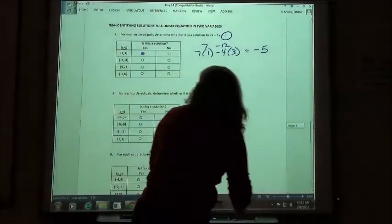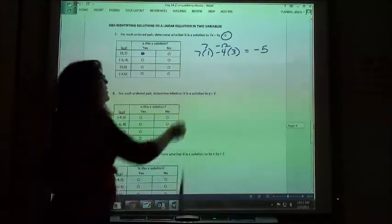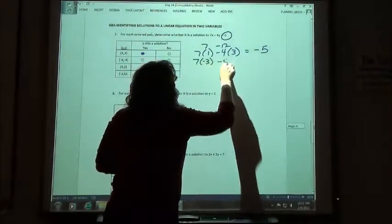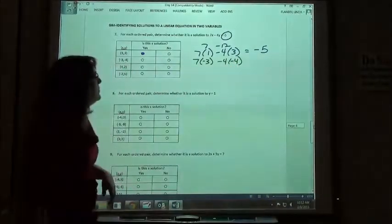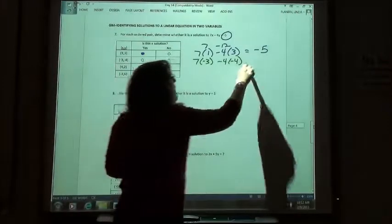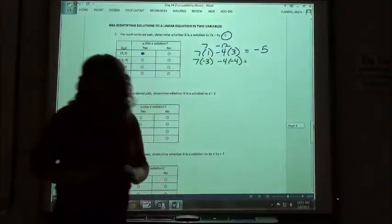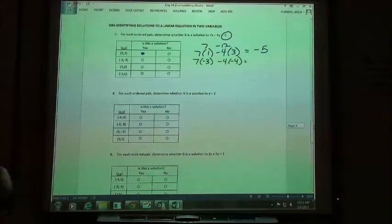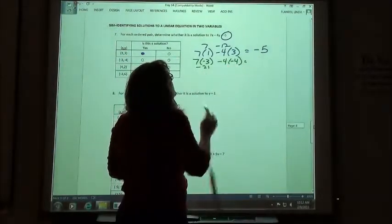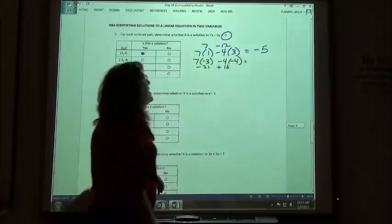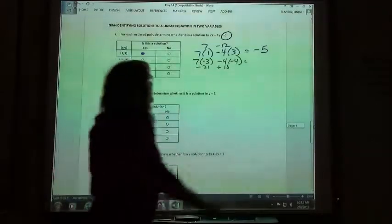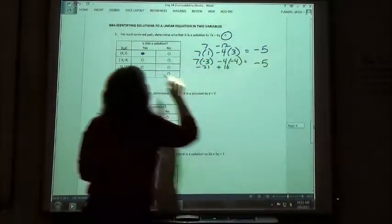Then I repeat it, only that one I'm going to use negative 3 and negative 4. So 7 times negative 3 minus 4 times negative 4. 7 times negative 3 is negative 21, negative 4 times negative 4 is plus 16. If we do negative 21 plus 16 we get negative 5. That one worked too.